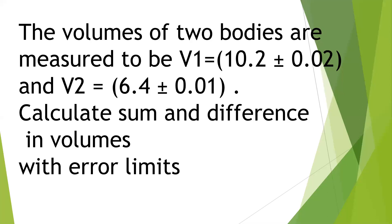V1 plus V2 means first we need to add 10.2 plus 6.4, which equals 16.6. For errors, absolute errors are added: 0.02 plus 0.01 equals 0.03. So V1 plus V2 equals 16.6 plus or minus 0.03.